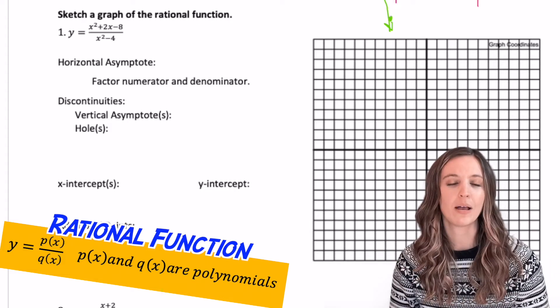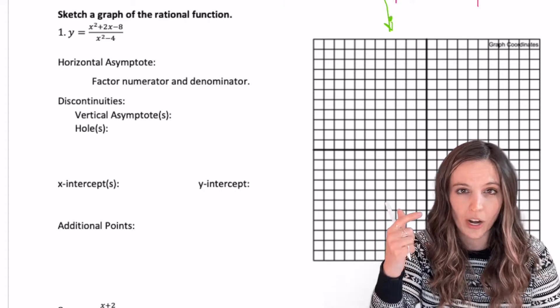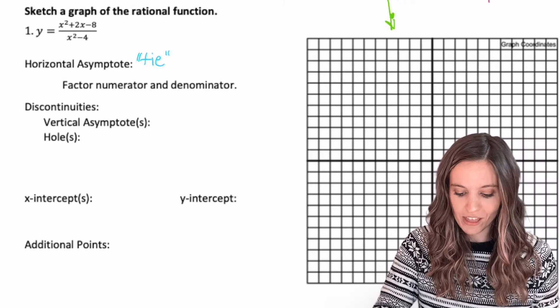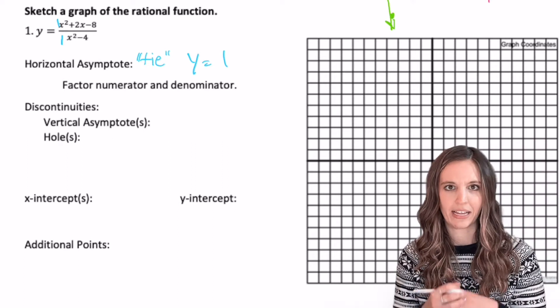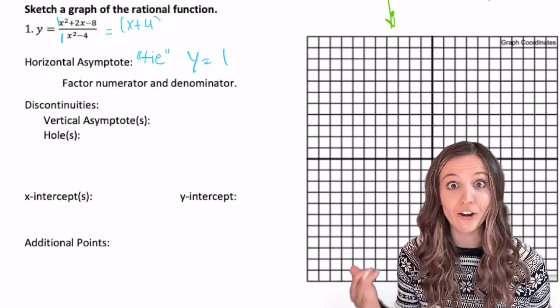In this first example, first thing we want to do, find the horizontal asymptote. Looking at the degree of the numerator and the denominator, well, it looks like we have a tie. It's just going to be the fraction in front. Y equals one. Okay. Now what? We got to look for our discontinuities. Well, to do that, we better factor.